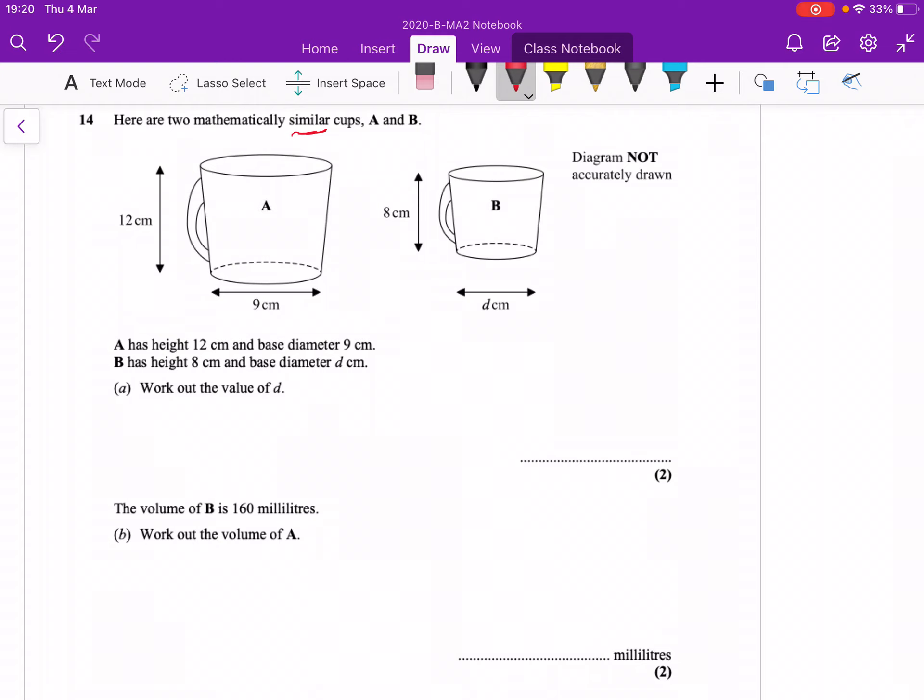If we went from B to A, the 8 becomes 12. So I can get the scale factor by doing 12 divided by 8, which comes out to be 1.5 is the scale factor for the lengths.